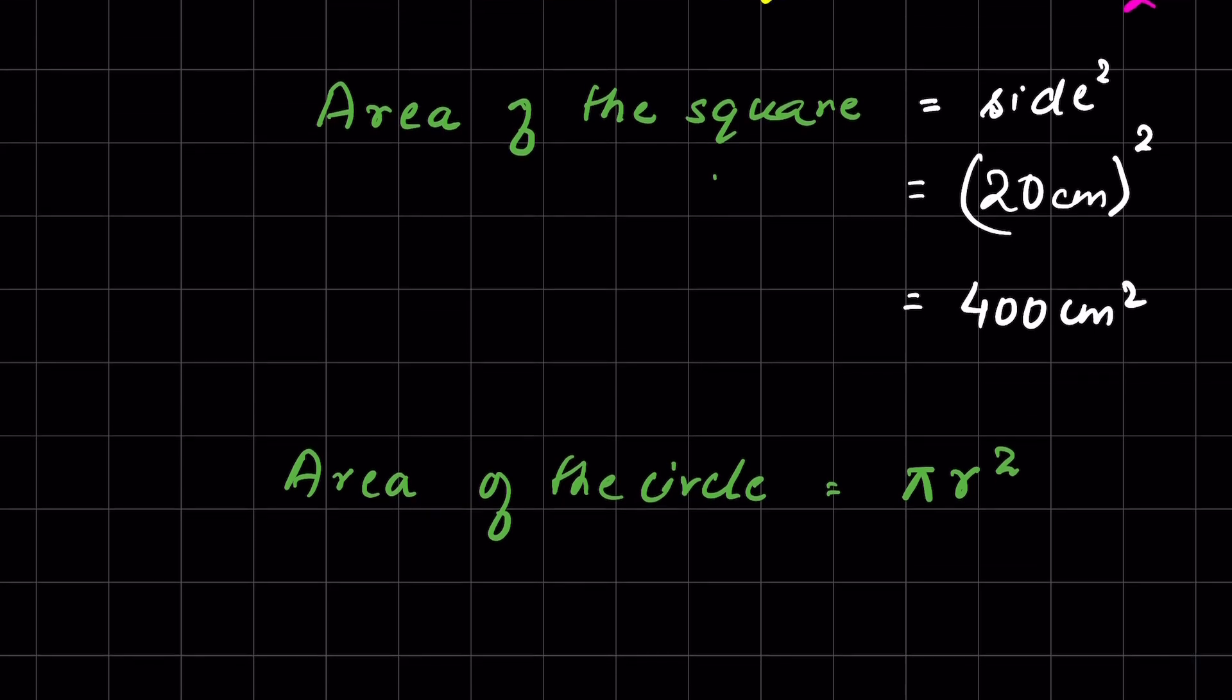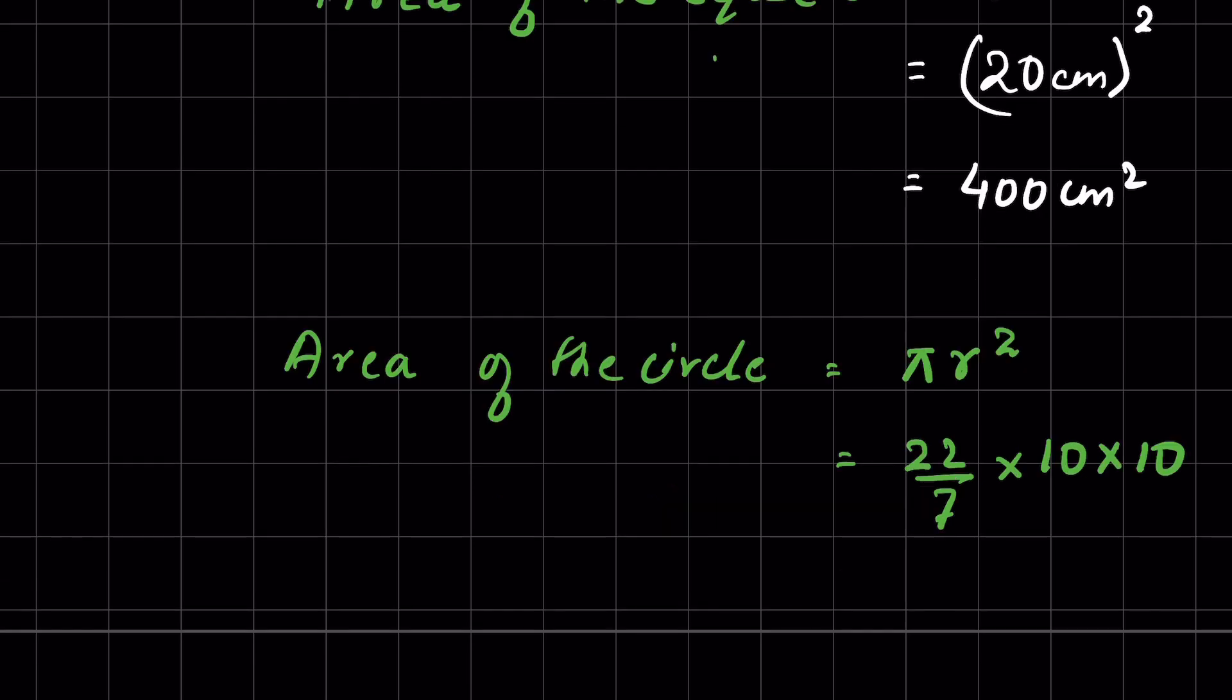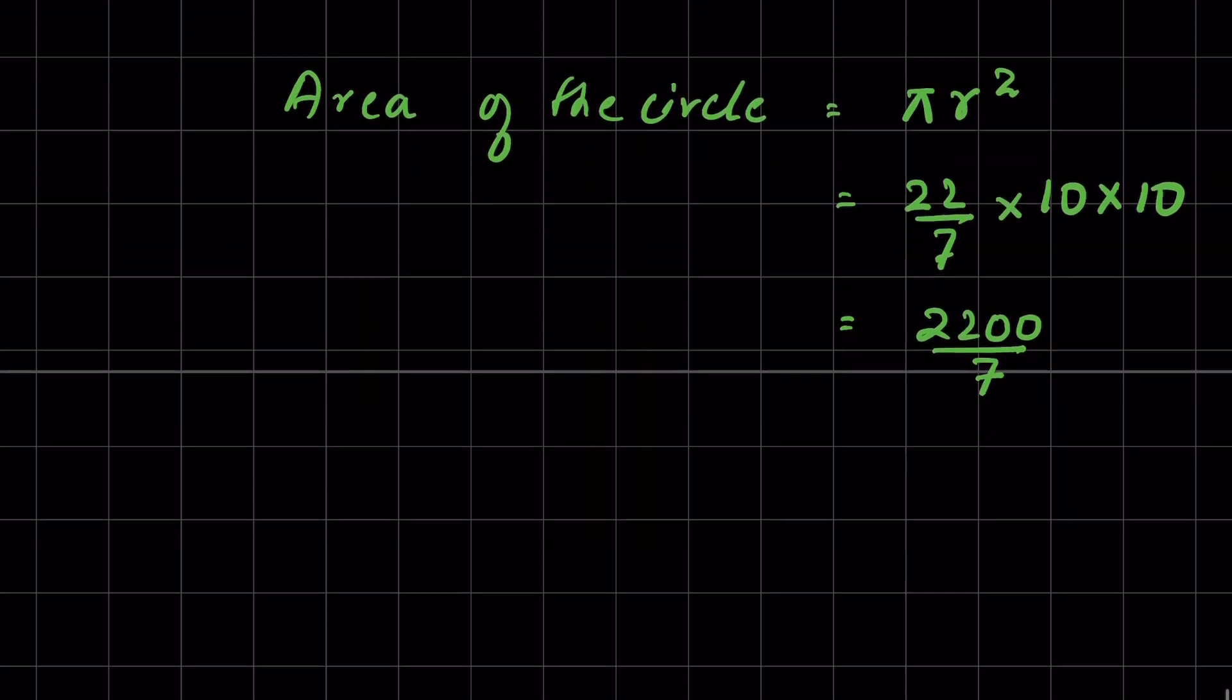We can calculate the area of the circle: 22 upon 7, the value of π, and radius is 10 squared. So 10 times 10, this equals 2200 upon 7.